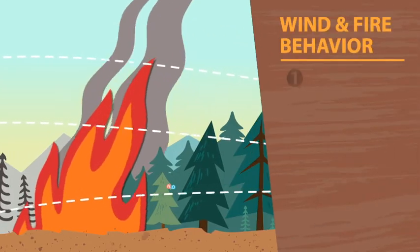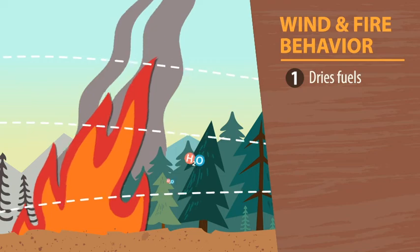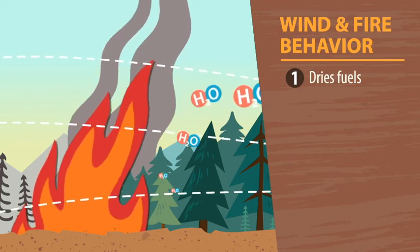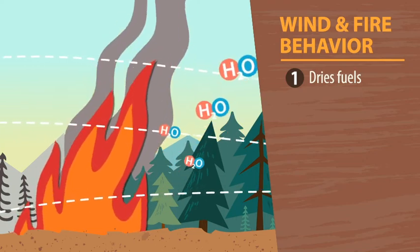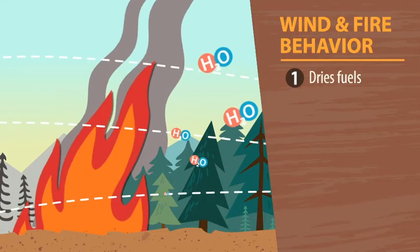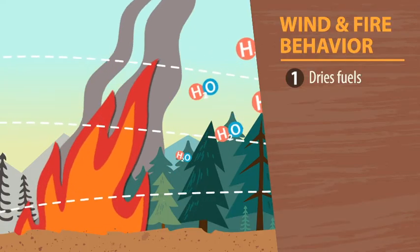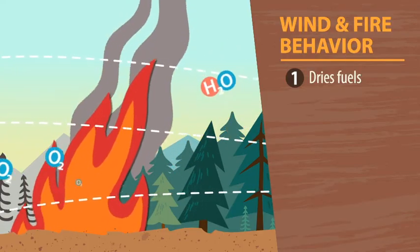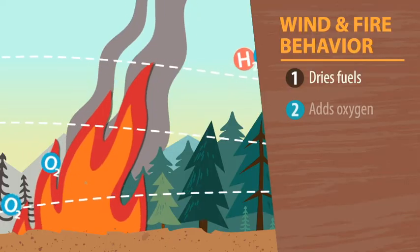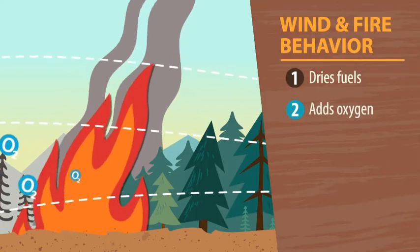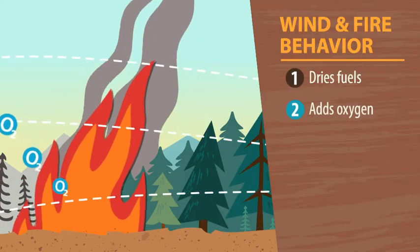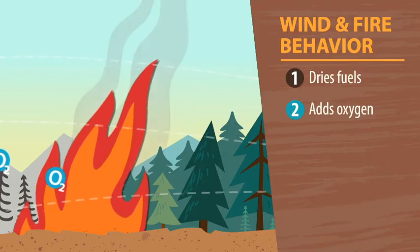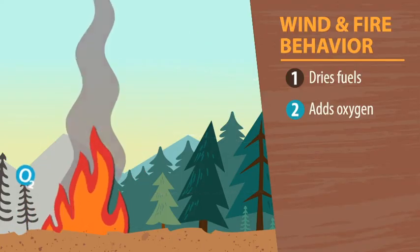Wind impacts fire in several ways. One: wind dries out the fuel. This is covered more in the videos on fuel moisture, but the short story is that fuel needs to be dry to burn and wind helps to carry the moisture away. Two: wind is air, and air contains oxygen, which is a necessary ingredient in combustion. If there's less oxygen, there's a smaller fire; if you add oxygen, you make it bigger.